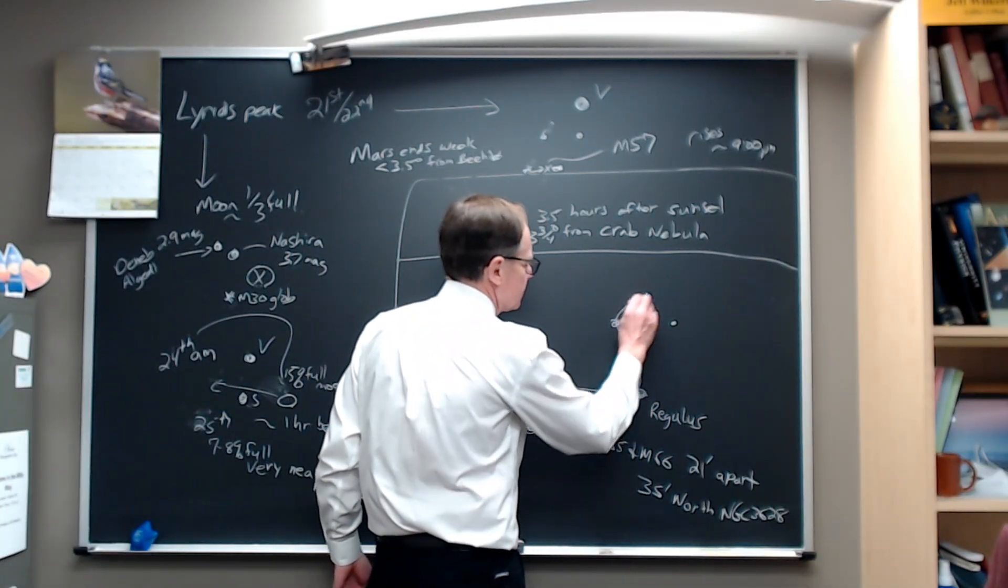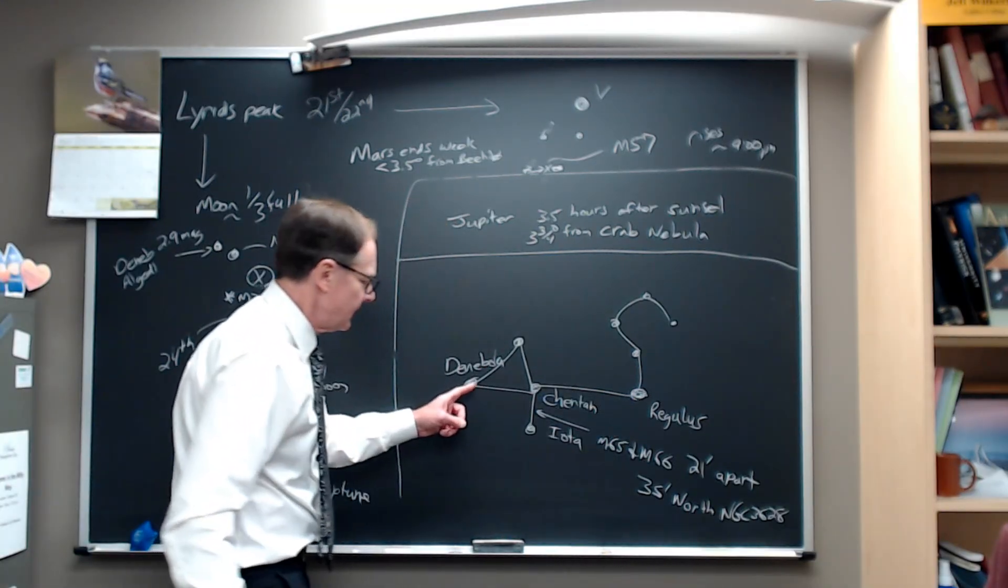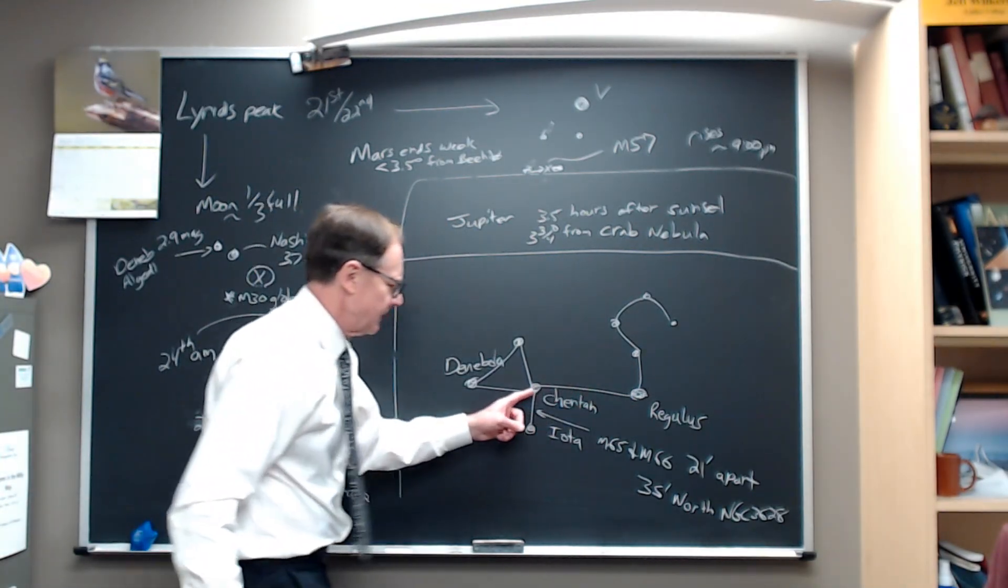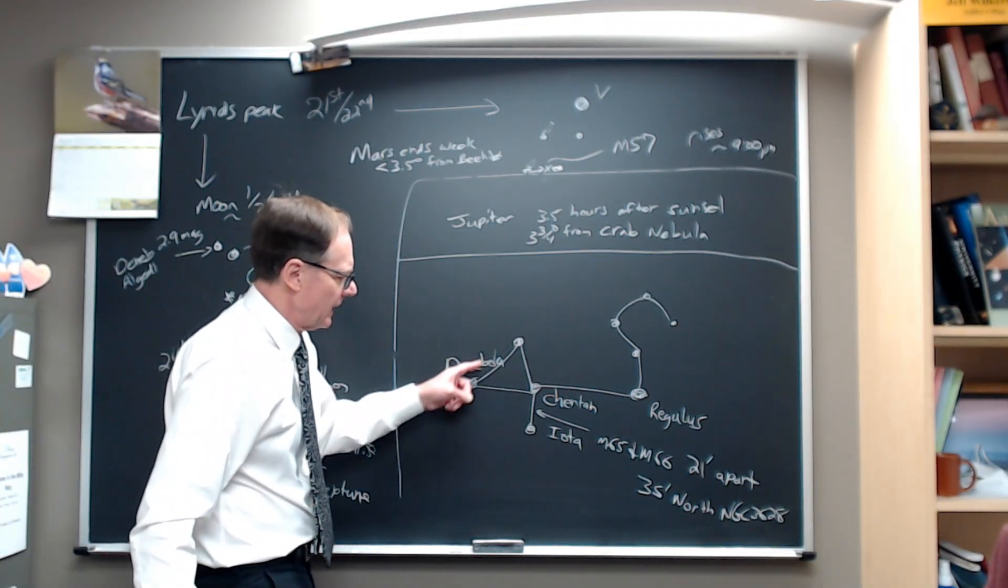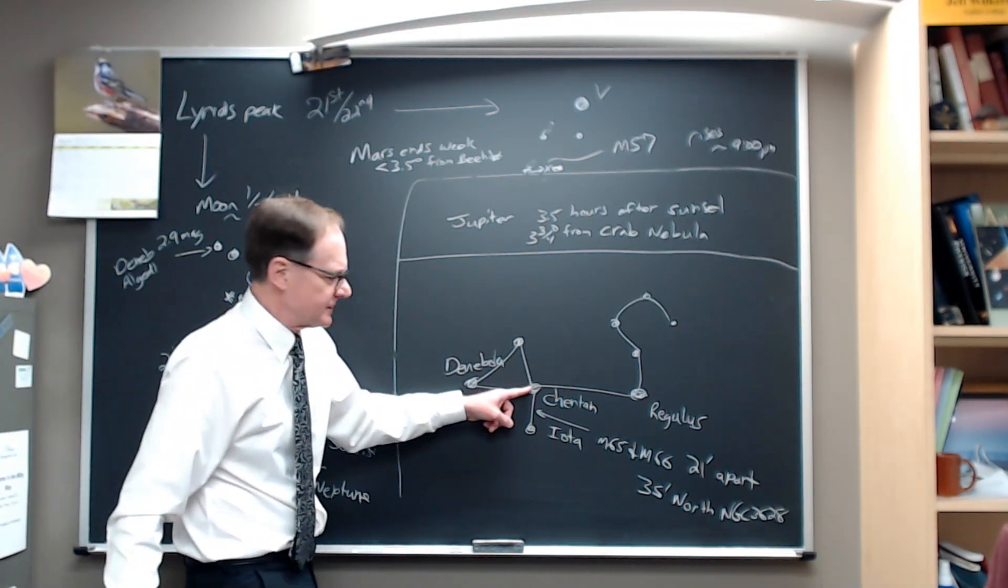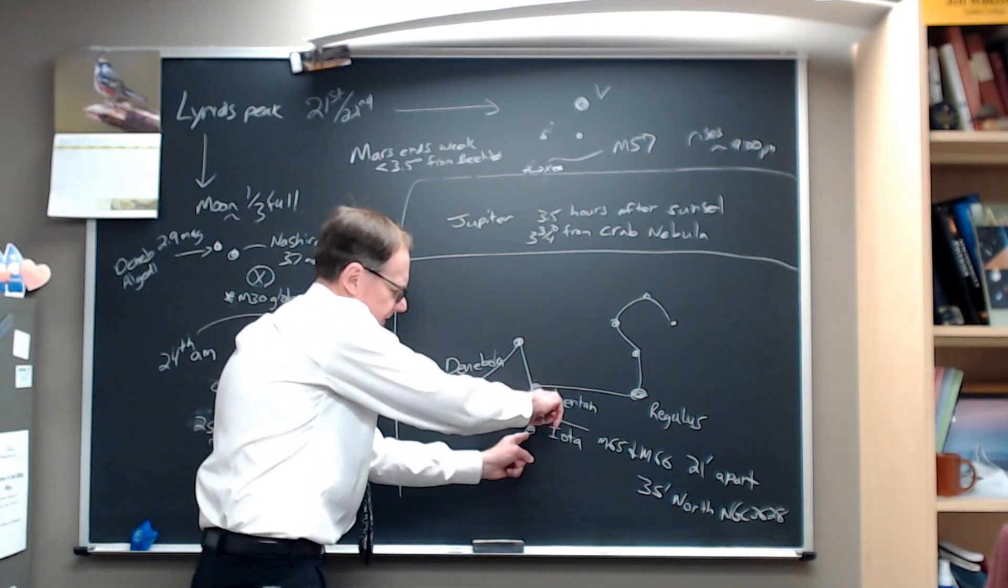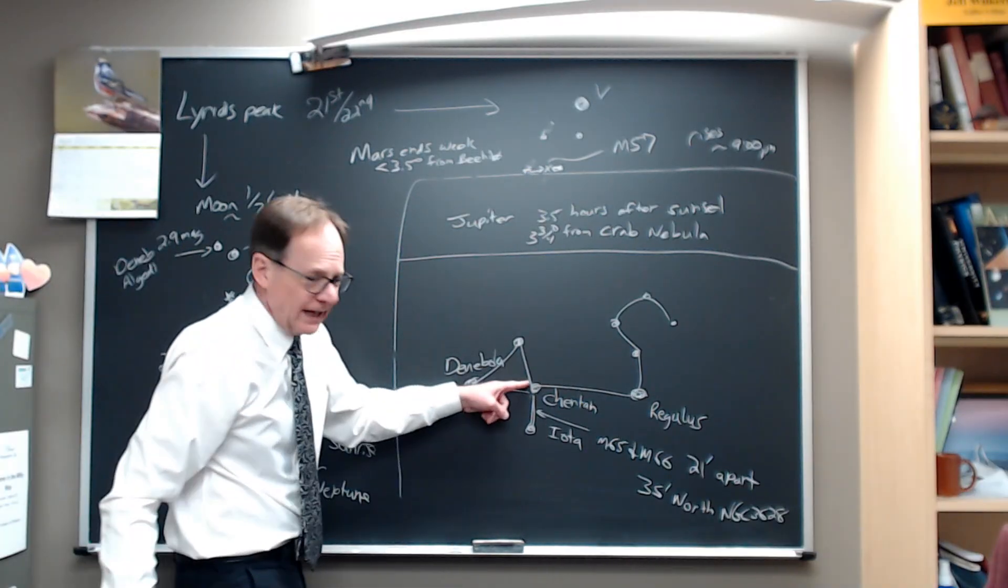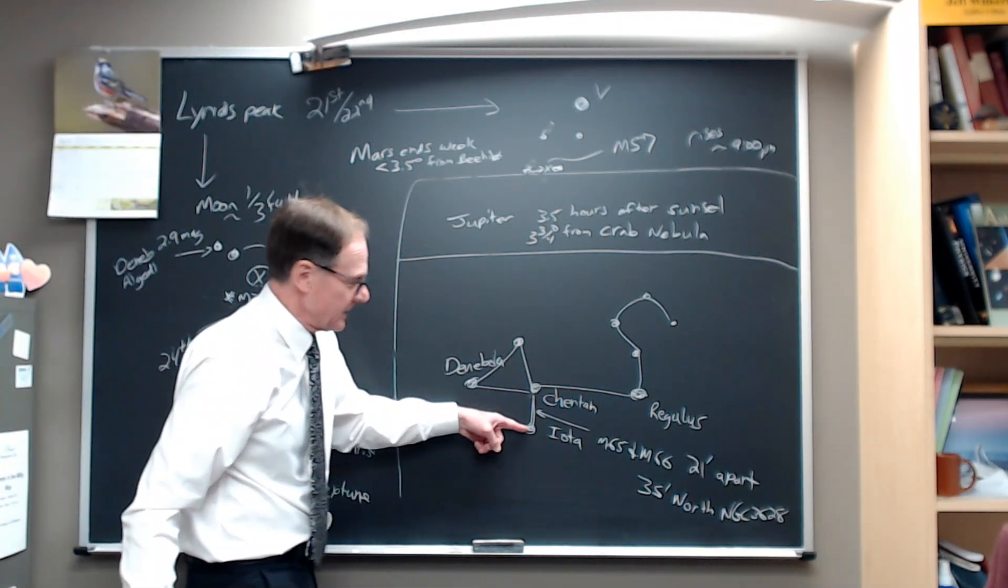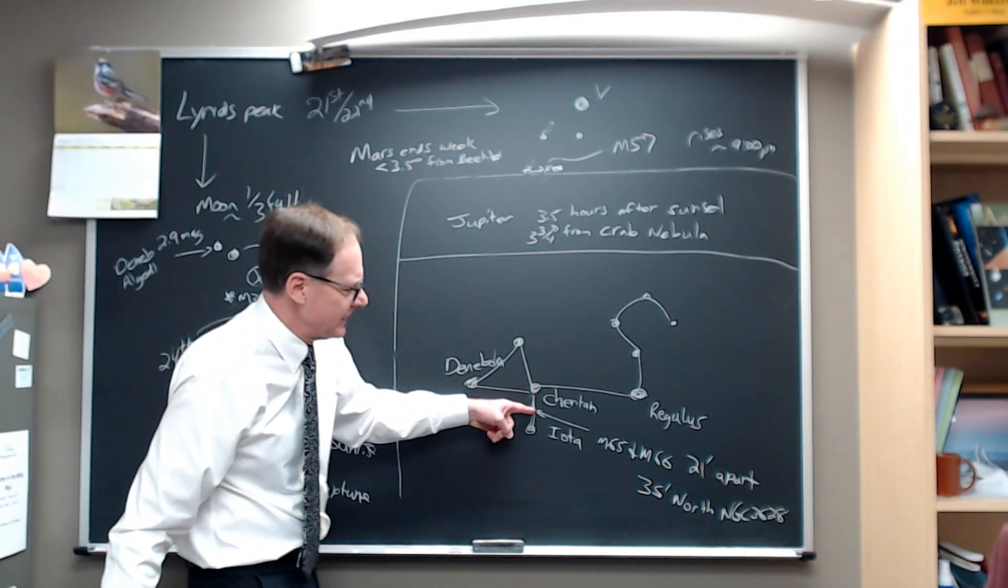So Leo is this question mark, this backward question mark or sickle for a tail with the bright star Regulus at the base. Then you have the head. And then you have Denebola is the tail star back here, the triangle tail. Theta is that star. You drop down from Theta, about two thirds and three quarters of the distance from Theta to Denebola, but straight down from Theta. Halfway between Theta and Iota, a fairly bright star, a fourth magnitude star.